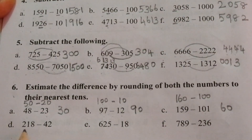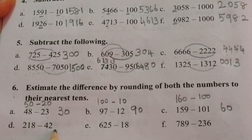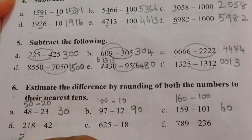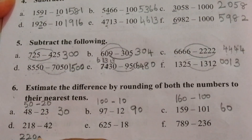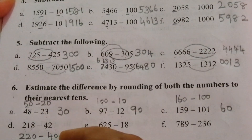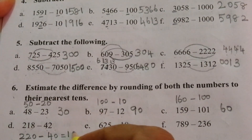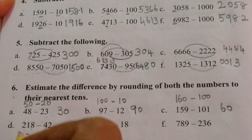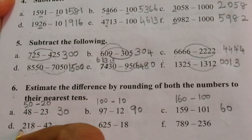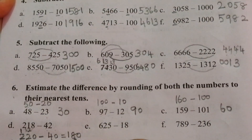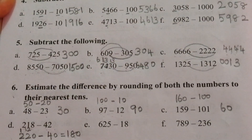D: Two hundred eighteen minus forty-two — two hundred eighteen is nearest to two hundred twenty, forty-two is nearest to forty. Two hundred twenty minus forty: zero minus zero is zero, borrow from two making it one and twelve minus four is eight — the answer is one hundred eighty.